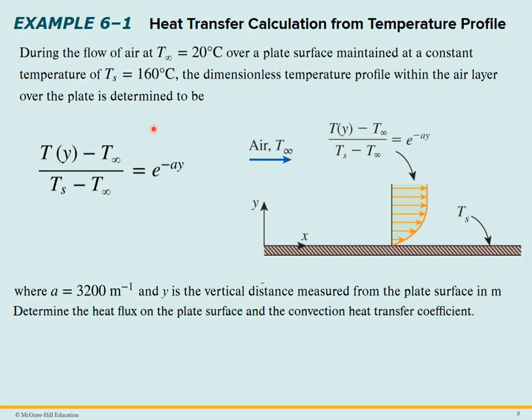Let's take a look at Example 6.1. During the flow of air at 20 degrees C over a plate maintained at a constant temperature of 160 degrees C, the dimensionless temperature profile within the air layer is determined to be given by the following equation, where A is a constant, 3200 per meter. We want to find the heat flux on the plate surface and the convection heat transfer coefficient.